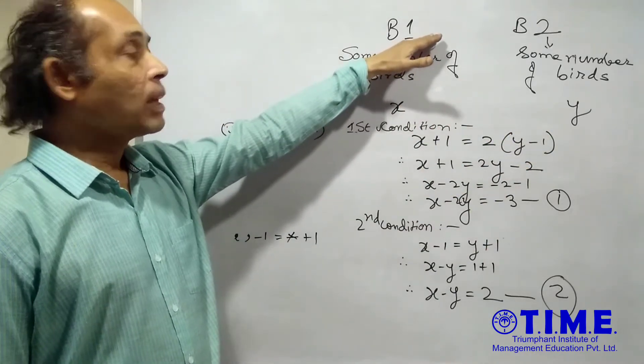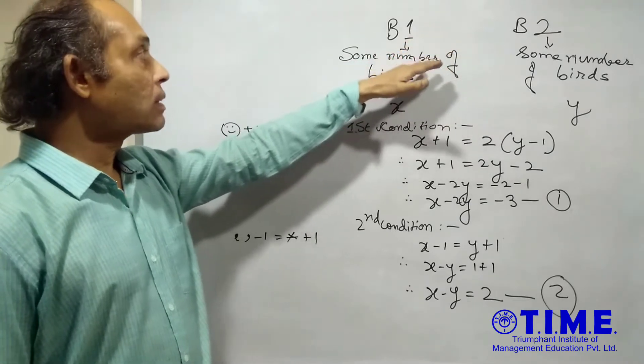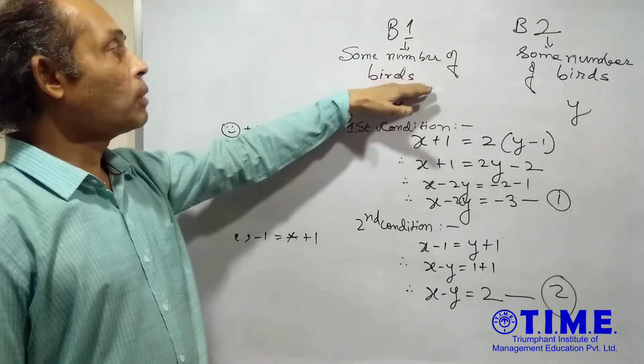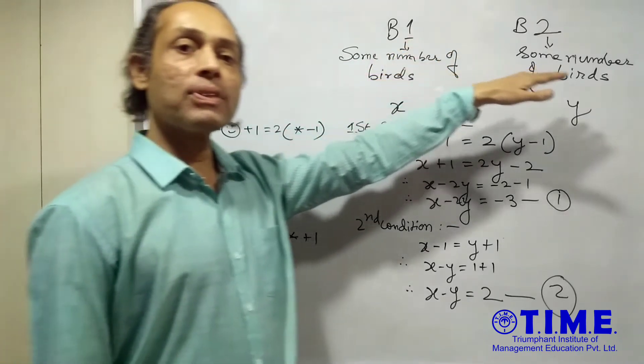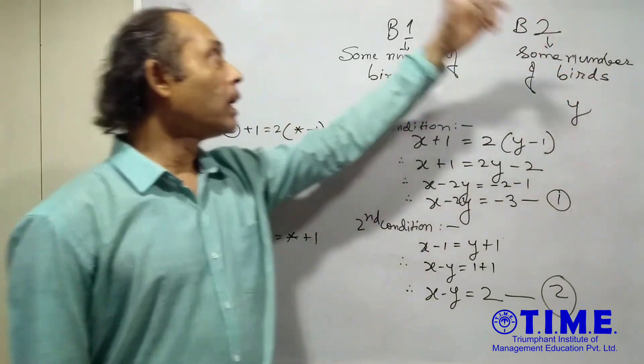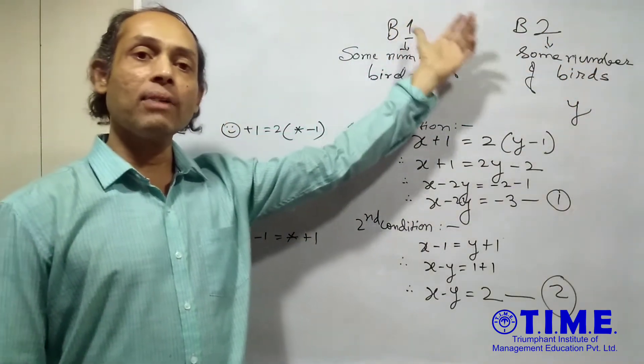Let us take a very famous riddle which goes like this. Some birds were sitting on one particular branch of a tree and some birds were sitting on another branch of a tree. Let us denote those two branches as B1 and B2.